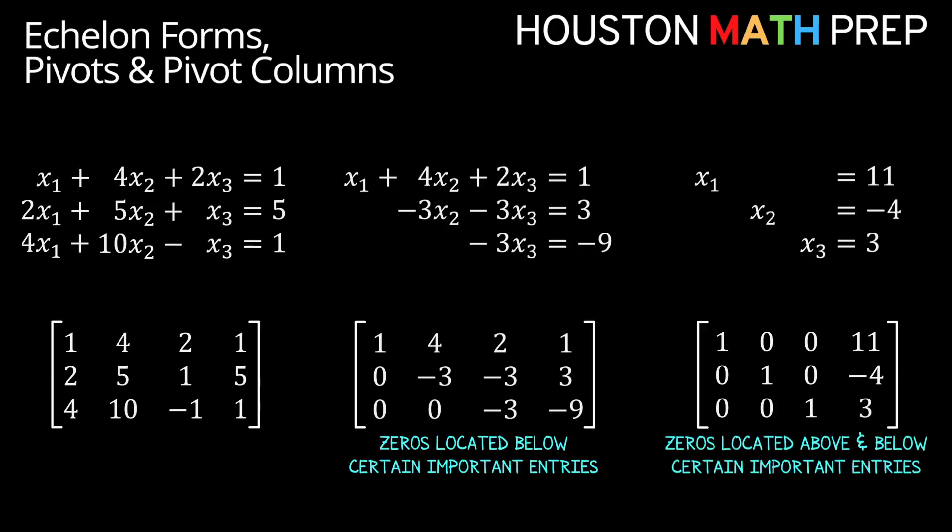In both of these augmented matrices, you can almost see a staircase type of pattern of zeros in them. In one of them, the staircase pattern of zeros seems to be in the bottom part of the matrix. And in the other, there seems to be a staircase both on the bottom and the top sections. And these are known as echelon forms in linear algebra.